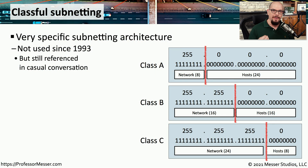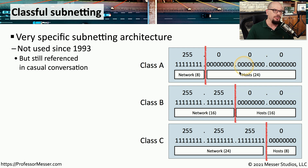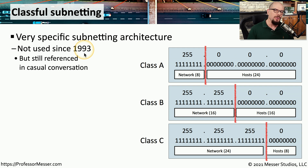As you begin the process of learning more about IP subnetting, understanding subnet masks becomes very important. When we start talking about IPv4 subnetting, you'll often hear about differences between Class A, Class B, and Class C IP subnets. This refers to a subnetting architecture that we technically haven't used since 1993. When IP was originally created, subnet masks were automatically determined based on your IP address, but today we use classless subnetting. For purposes of understanding today's form of subnetting, we're going to look back at how this classful-based subnetting process works.